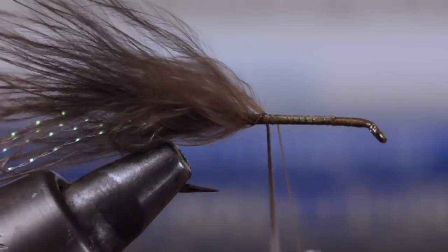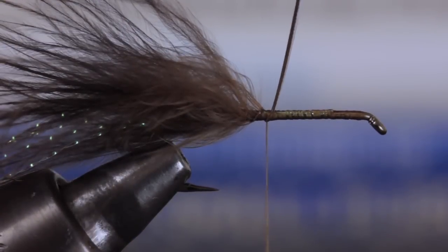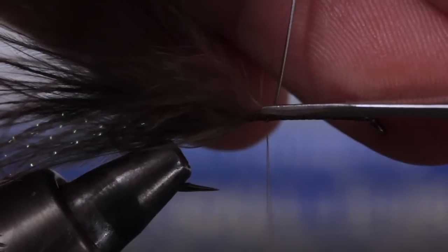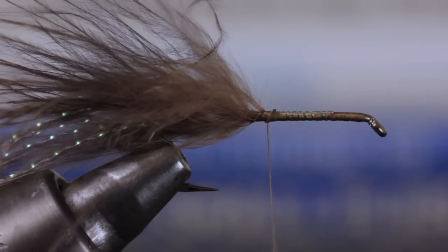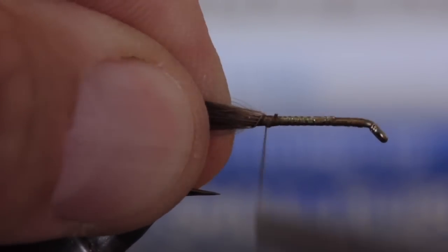Keep making wraps until you reach the bare stem and secure it with a few tight wraps of tying thread. You can then snip the butt end of the stem off close. Take a few more thread wraps to absolutely lock everything in place.